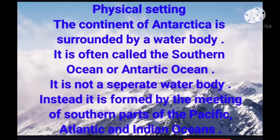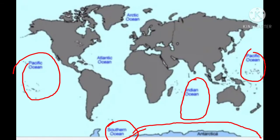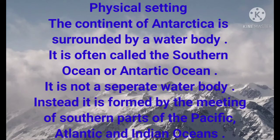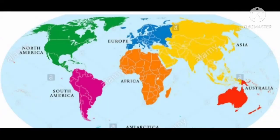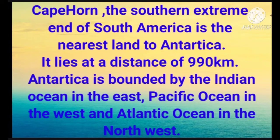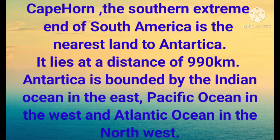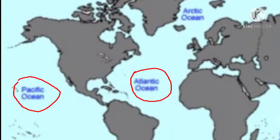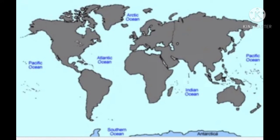The physical setting of Antarctica: the continent is surrounded by a water body. It is often called the Southern Ocean or the Antarctic Ocean. However, it is not a separate water body; instead, it is formed by the meeting of the southern parts of three oceans — the Pacific Ocean, the Atlantic Ocean, and the Indian Ocean. Cape Horn is the nearest land to Antarctica, lying at a distance of 990 kilometers away. Antarctica is bound by the Indian Ocean in the east, the Pacific Ocean in the west, and the Atlantic Ocean in the northwest.